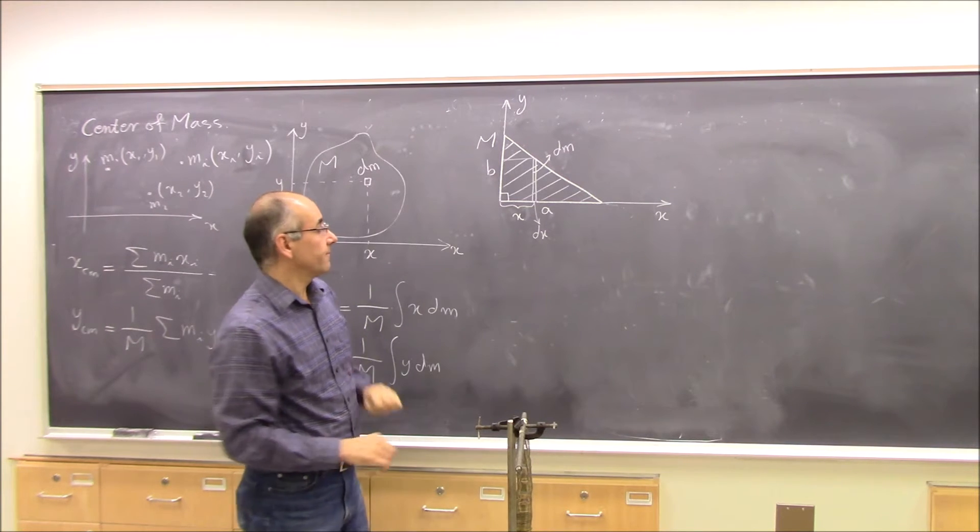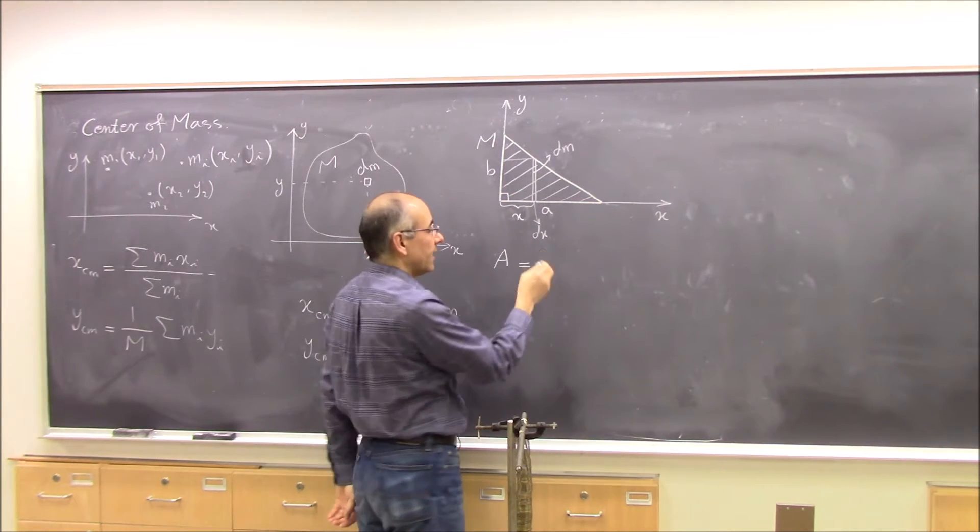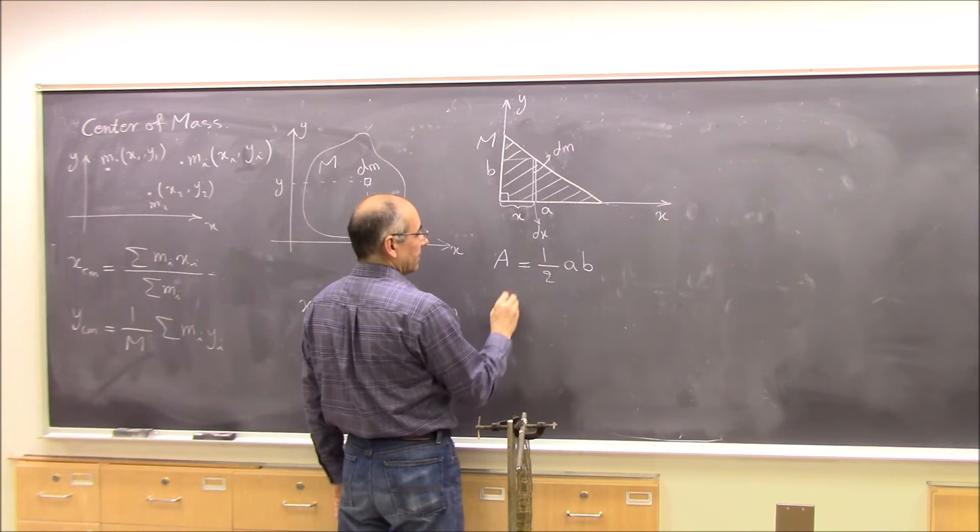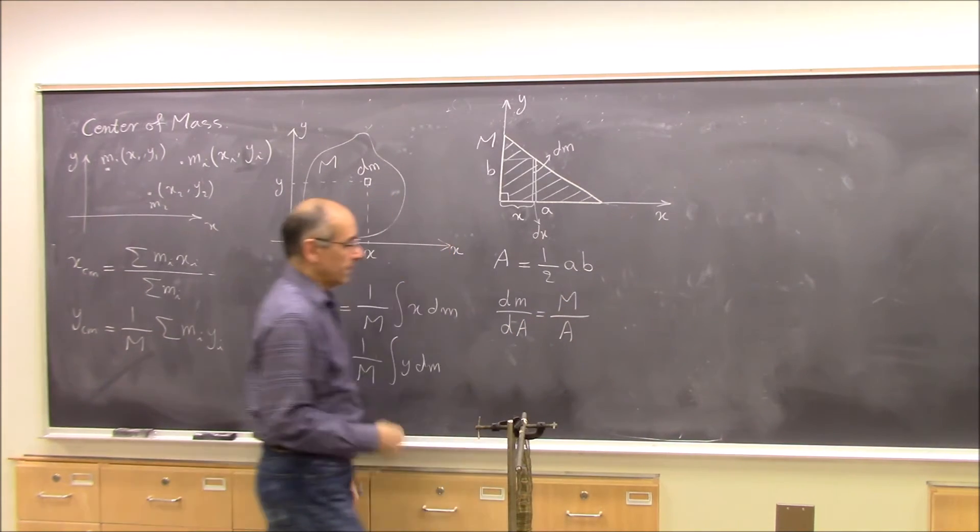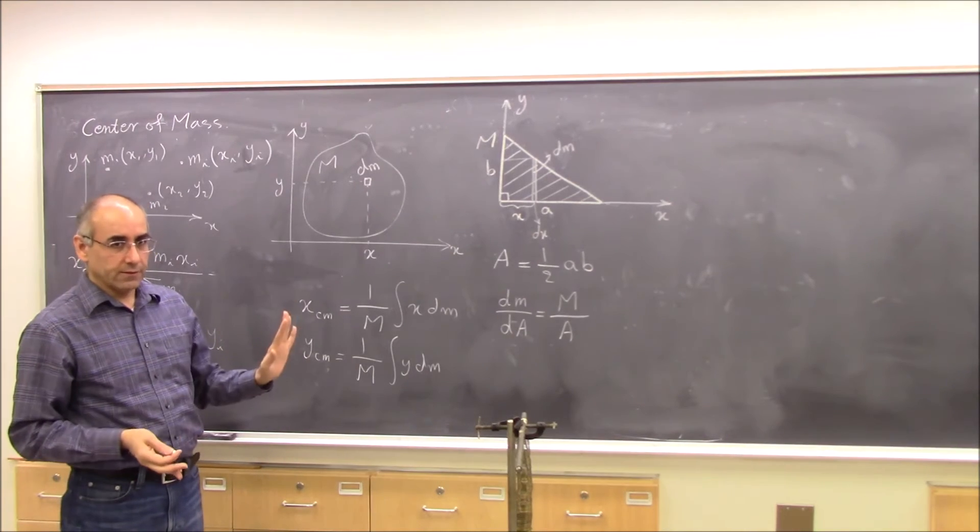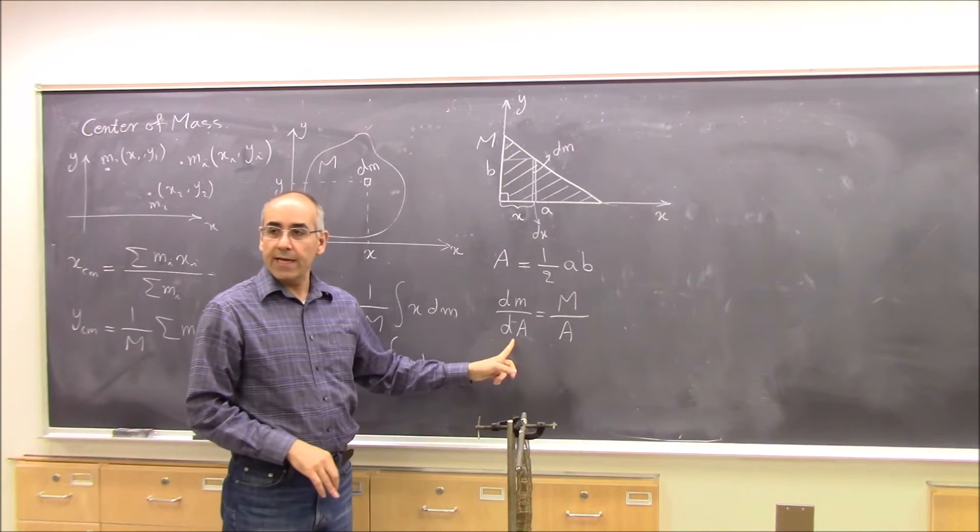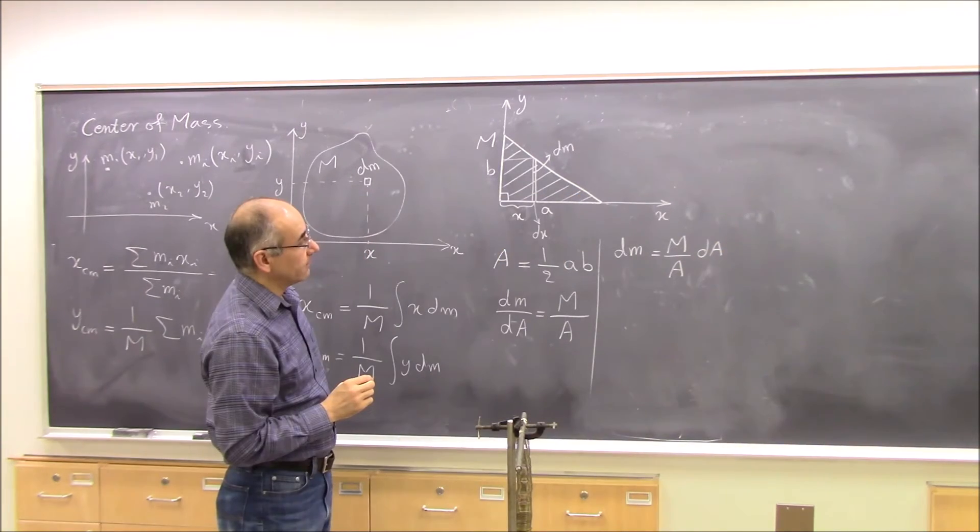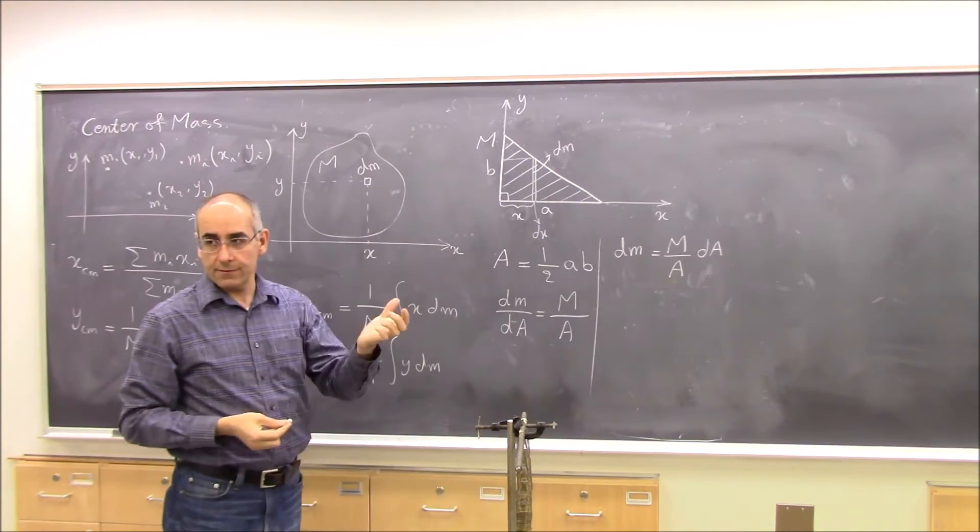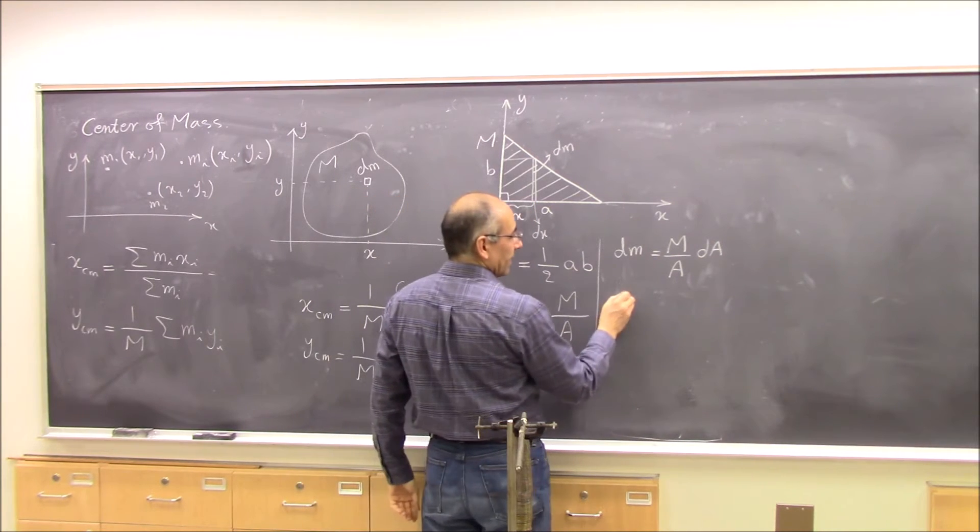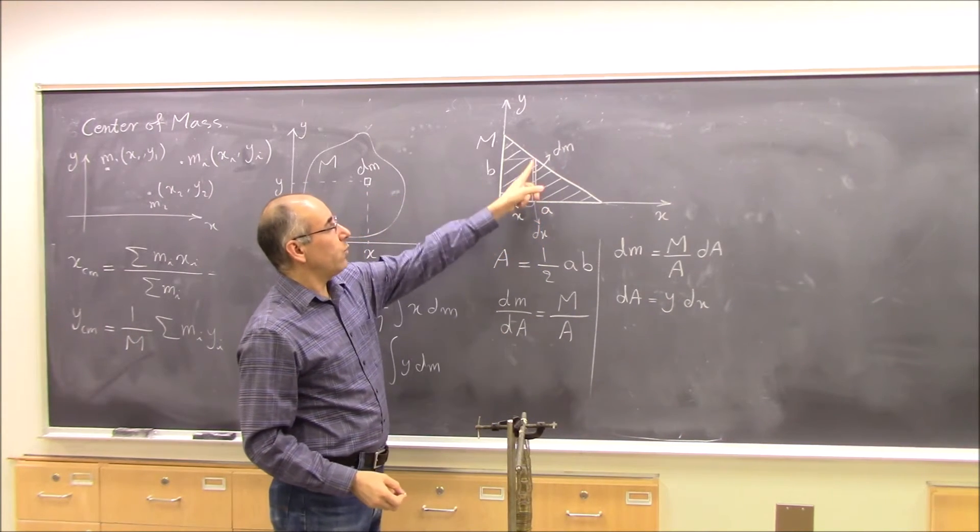Total mass M. What is the total area of the triangle? The total area is one half base times height, one half a times b. We can say dm over da equals the total mass over A, because the mass is uniformly distributed over the area. dm over da is the same as total mass over total area. And then dm will be M over A times da. What is da? We have to find da. da is this dx times y, isn't it? Kind of like a rectangle, because dx is very small. And da is y dx. But I want to write everything in terms of x. What is y in terms of x?